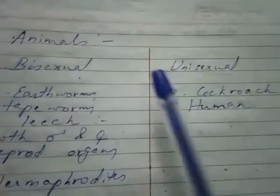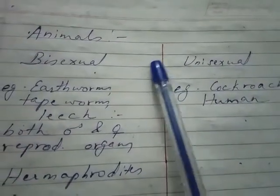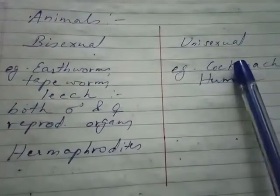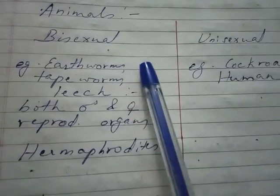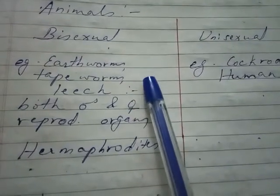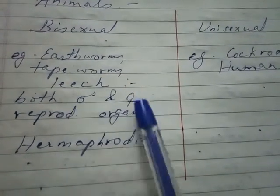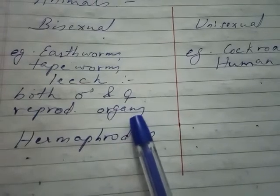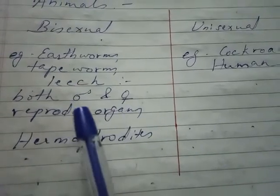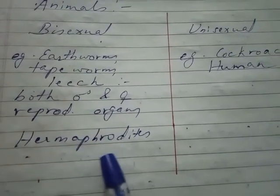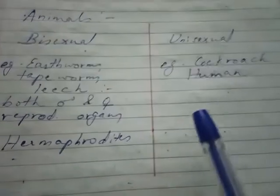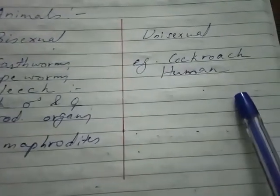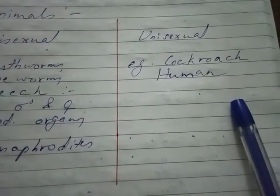Similarly, animals can be bisexual or unisexual. In bisexual animals, both male and female reproductive organs are in the same animal; they are called hermaphrodites — for example earthworm, tapeworm, and leech. In unisexual animals, male and female organisms are separate, for example cockroaches and human beings.